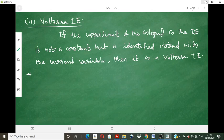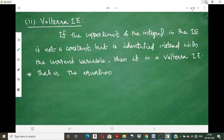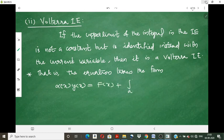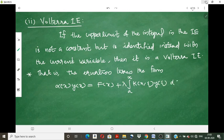The second type is the Volterra Integral Equation. If in the integral equation the upper limit of the integral is not a constant but is identified with the current variable x, then that equation is called a Volterra Integral Equation. It takes the form: alpha(x) · y(x) = f(x) + λ ∫[a to x] k(x, θ) y(θ) dθ.